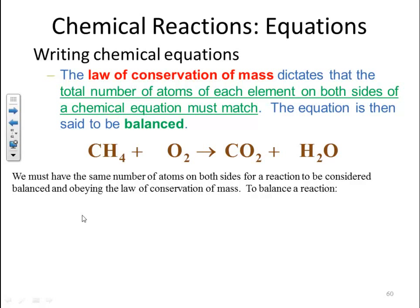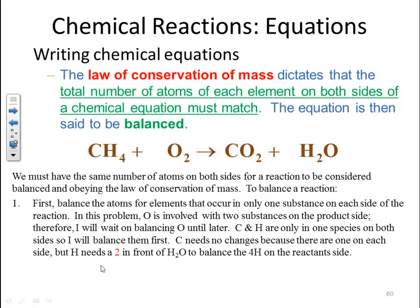So to balance a reaction, first we balance the atoms for the elements that occur in only one substance on each side of the reaction. In this problem, oxygen is involved with two substances on the product side, carbon dioxide and water. So I'll wait and balance that later. I'll concentrate on the other species. Carbon and hydrogen are only in one species on both sides. So I'll balance them first.